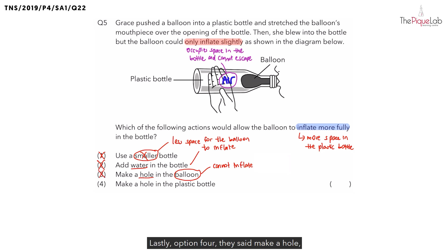Lastly, option four, they said make a hole, but this time in where? Inside the plastic bottle. Now when there is a hole inside the plastic bottle, what do you think happens to the air? When you try and blow the balloon, the balloon is going to occupy more space in the bottle. And when the balloon occupies more space in the bottle, what will happen to the air? The balloon pushes the air out and this allows the air to escape. So because of that, is there going to be more space or less space left in the plastic bottle? There is going to be more space, which means the correct answer should be option four.